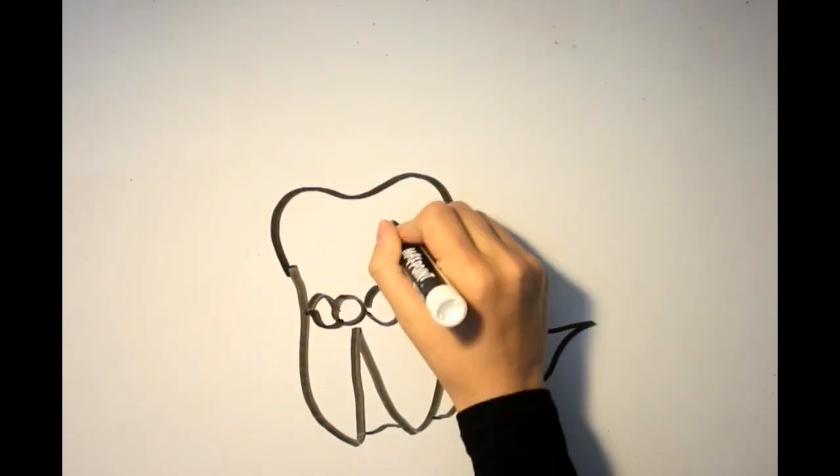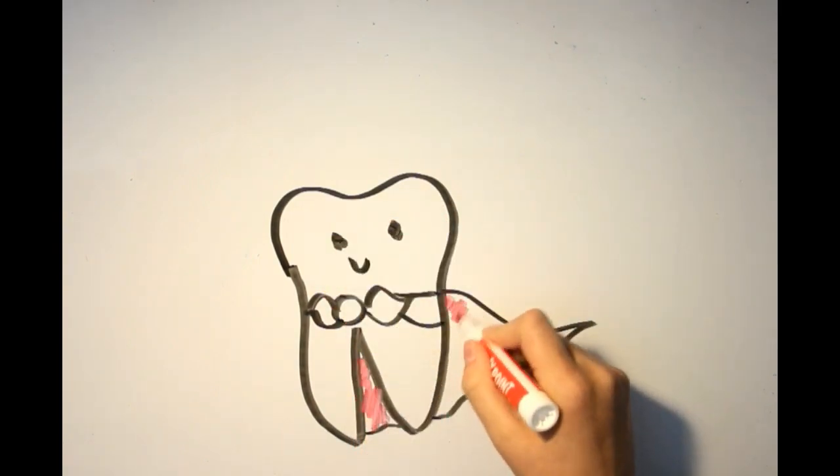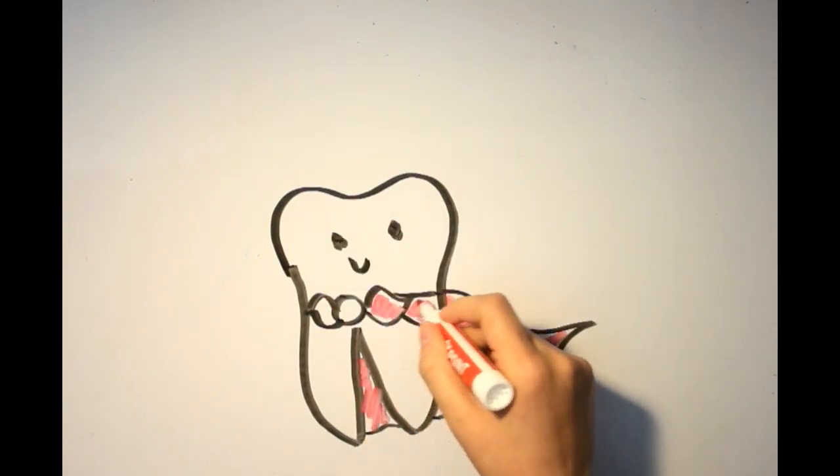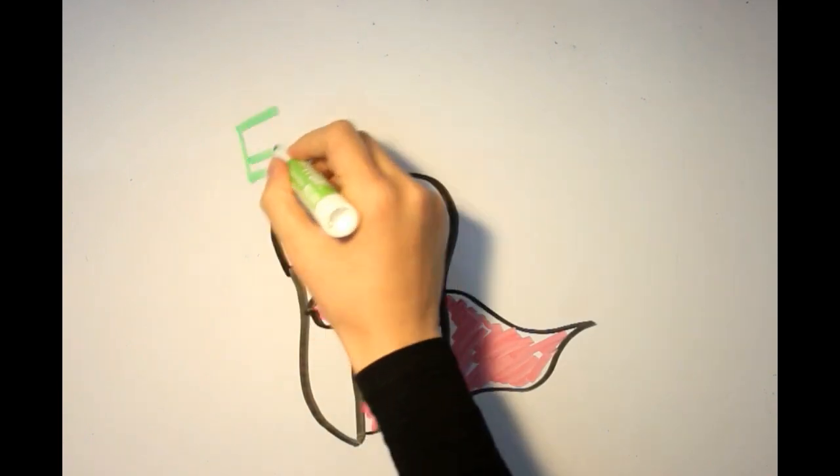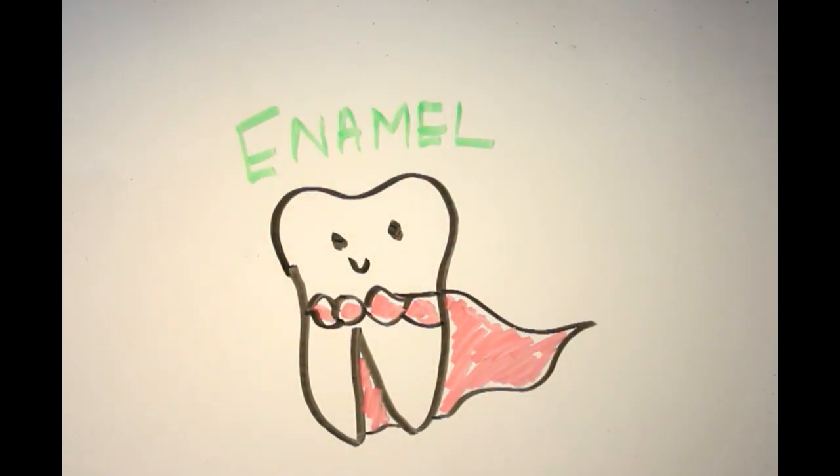Enamel is the outermost part of the crown covering the dentin. It's the hardest part of the human body due to the fact that it's highly mineralized, making it harder than both dentin and bone.